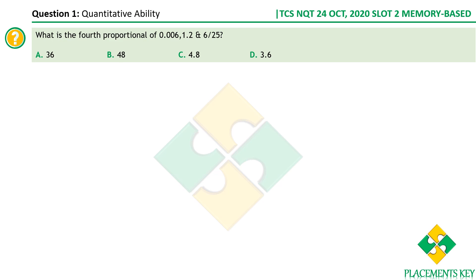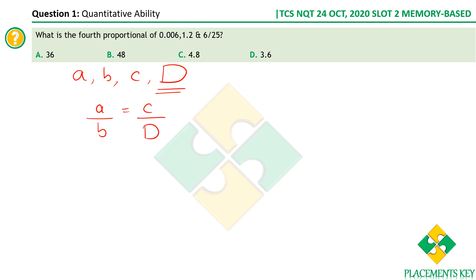Let's start with this: what is the fourth proportional of 0.006, 1.2, and 6/25? First we need to know what is a fourth proportional. The fourth proportional of a, b, c is a value d such that the ratio a/b is equal to c/d.